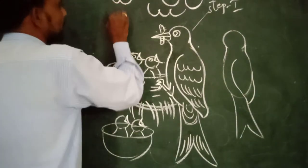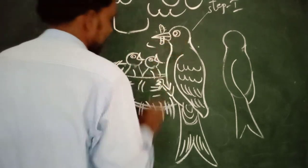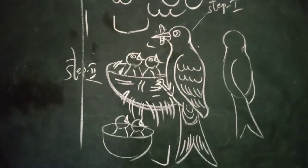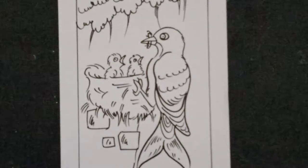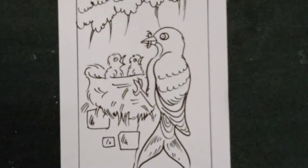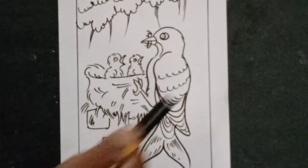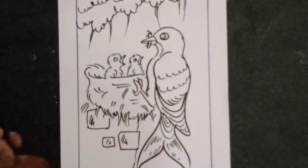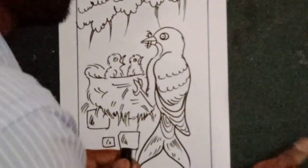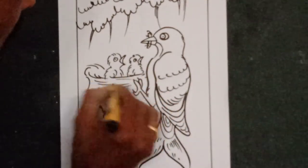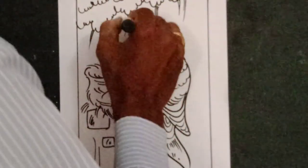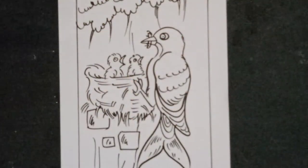Now you can take one black sketch pen or marker and try to give the picture outline. After giving the picture outline, you can erase the pencil lines.